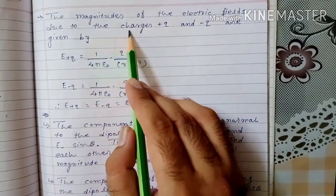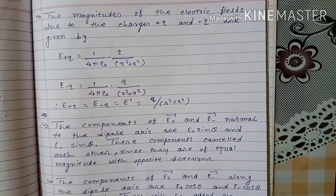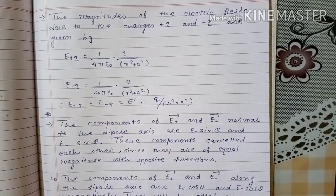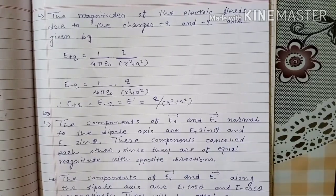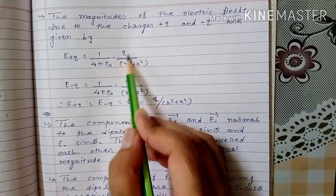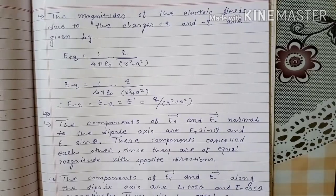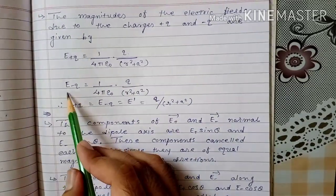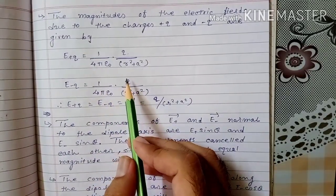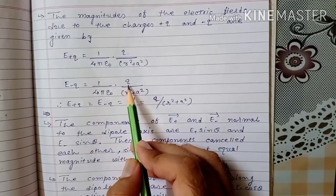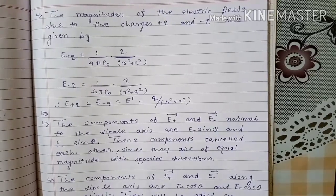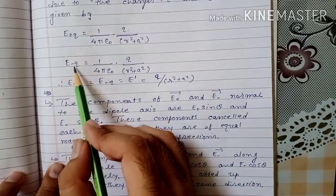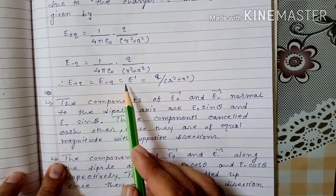The magnitude of electric field due to plus q: E_+q = (1/4πε₀) × q/(r² + a²). The magnitude of electric field due to minus q: E_−q = (1/4πε₀) × q/(r² + a²). Both magnitudes are equal, so we call them E′. The direction of E_+q is away from plus q, and E_−q is towards minus q. If the angle between each field and the axis is θ, then the components E′ sin θ are equal and opposite — they cancel.